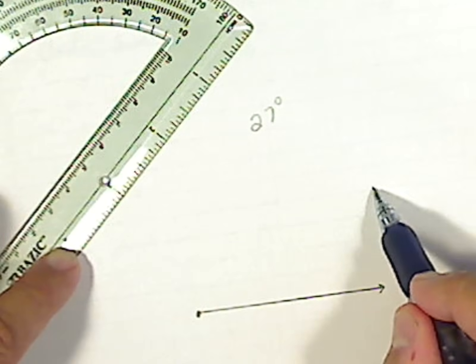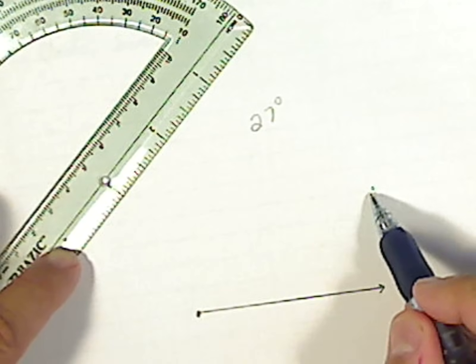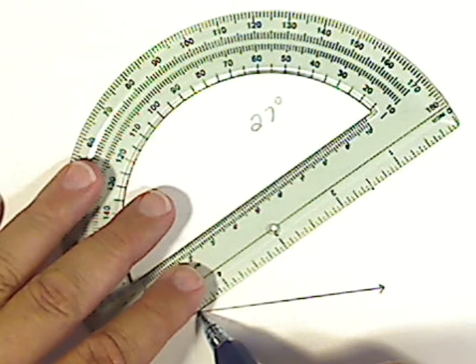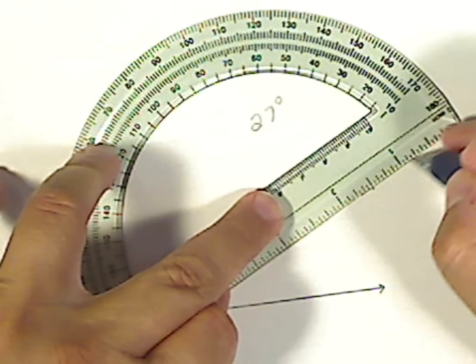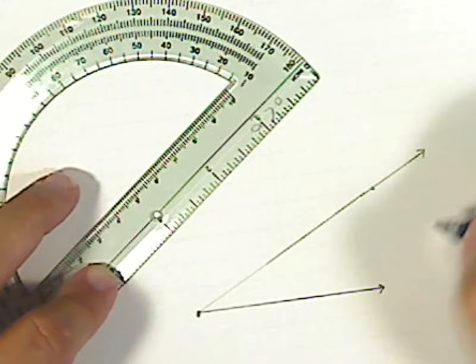Two points establish a line, and a ray is part of a line. So I just connect the points. And what I have here is an angle that's at 27 degrees.